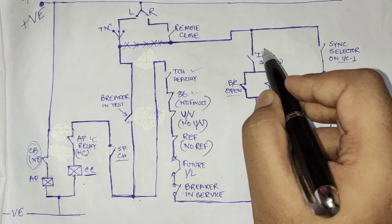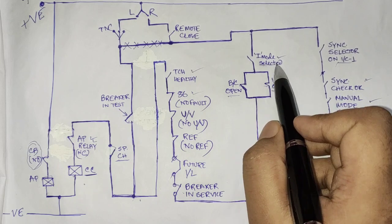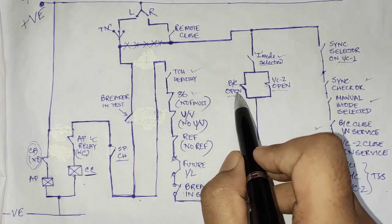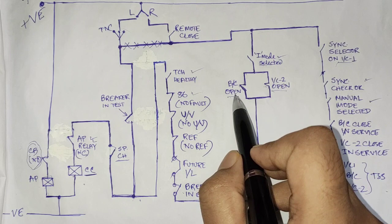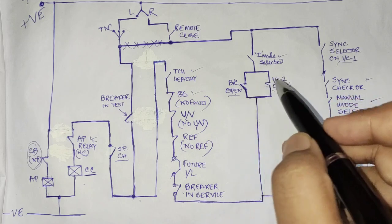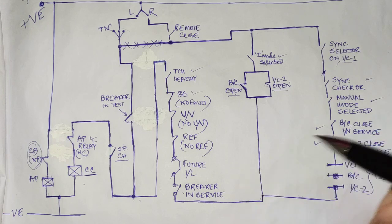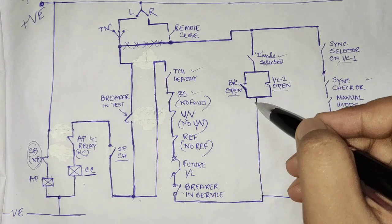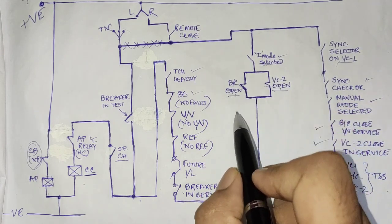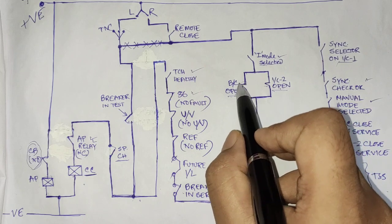First we will discuss the independent mode portion. Independent mode selected means the breaker will be operated under interlocked condition. Here we are checking two conditions: whether the bus coupler is open or Incomer 2 is open. The contact states — NO or NC — are shown when the respective relay coil or breaker is in the open or racked-out test condition. Bus coupler open is shown as an NC contact, meaning if the bus coupler is open the contact is NC; if it is closed, the contact will open.